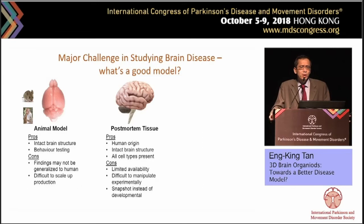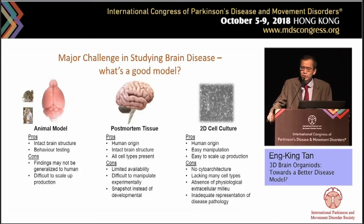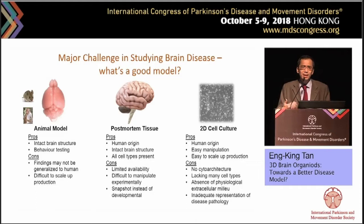Different animal models of Parkinson's disease have been created — biochemical models, transgenic models — but we know they have limitations. Non-human primates are very difficult to scale up, even though they offer good opportunity to study behavioral aspects. Many mouse models tested for therapeutic purposes have not actually translated into results in clinical trials. For scientists working on 2D cell culture, cells are easy to scale up and study specific cell types, but these cultures do not primarily have cytoarchitecture and do not mimic the in vivo physiology we are talking about.